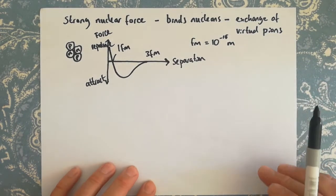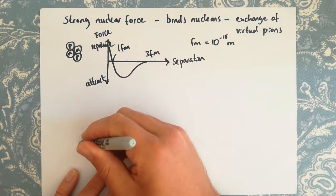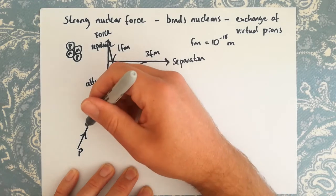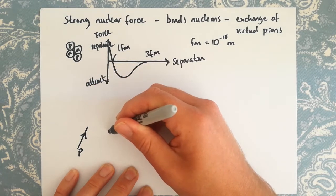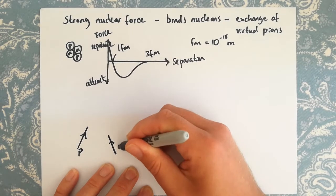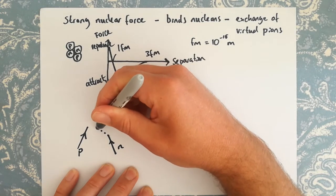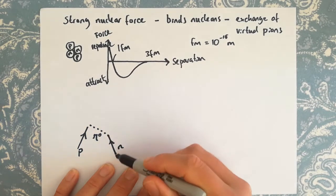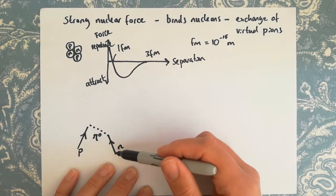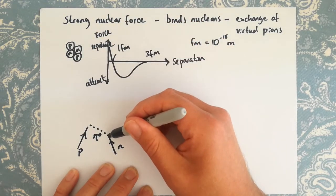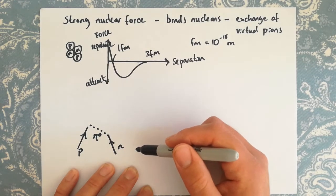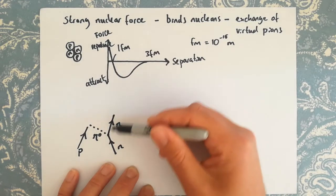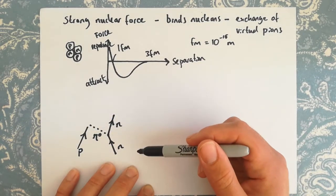The attractive part of this force is due to the exchange of virtual pions, and that's what we're going to look at the Feynman diagrams for. We'll start with a proton interacting with a neutron. There are various diagrams we can draw for this interaction — we use a dashed line for the exchange particle.